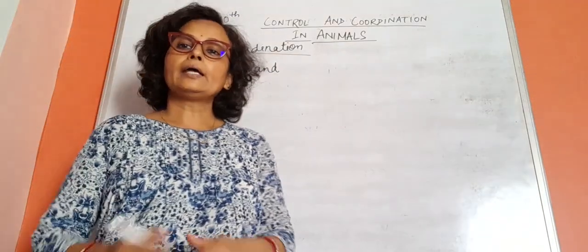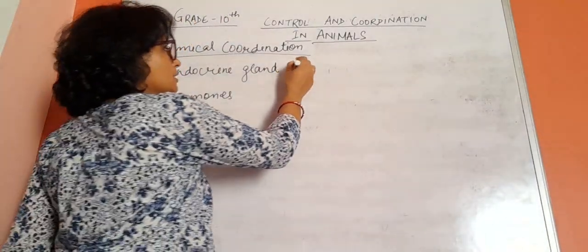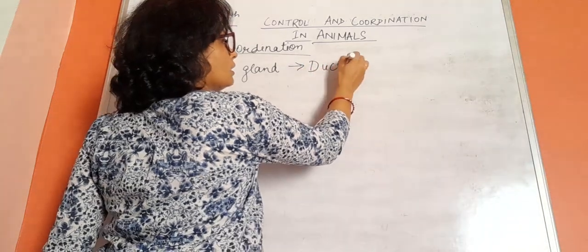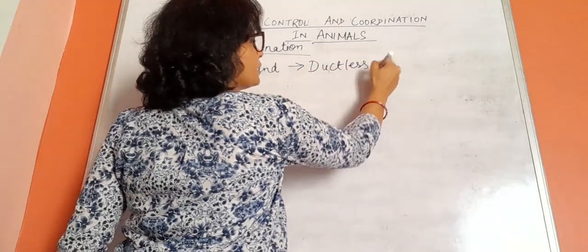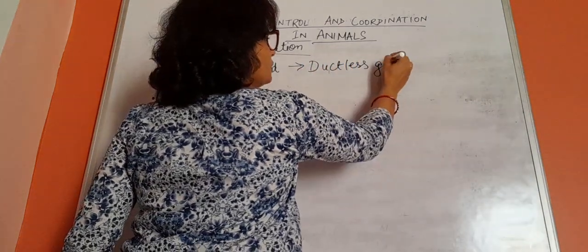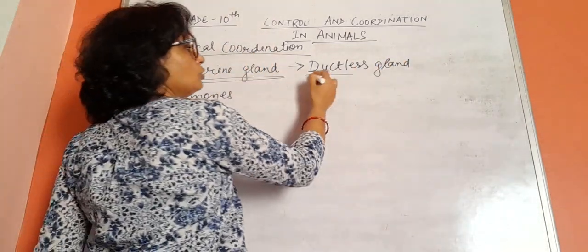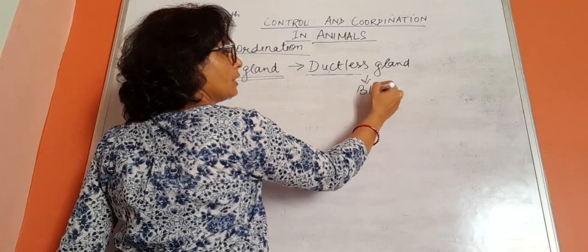Now, what is endocrine gland? Endocrine glands are the ductless glands. No duct is there, and everything that is produced from the endocrine gland directly goes to the bloodstream.